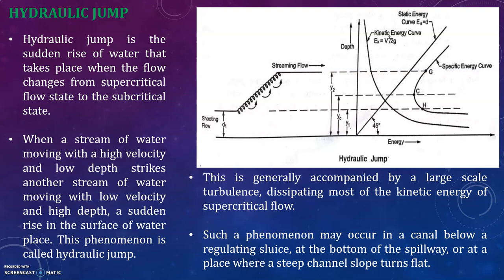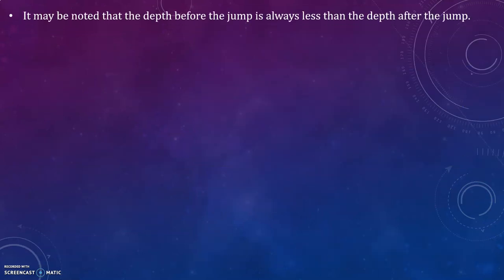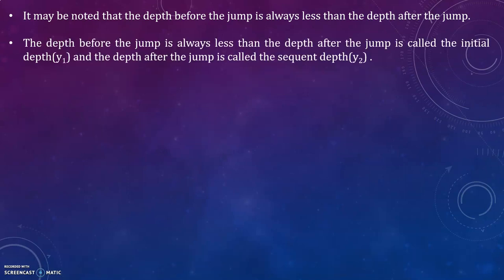It may be noted that the depth before the jump is always less than the depth after the jump. The depth before the jump is called the initial depth, that is y1, and the depth after the jump is called the sequent depth, that is y2.